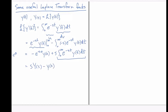So we can now write down that the Laplace transform of y prime is s times the Laplace transform of y minus y of 0, where y of 0 is the initial value of little y. This holds when s is positive.